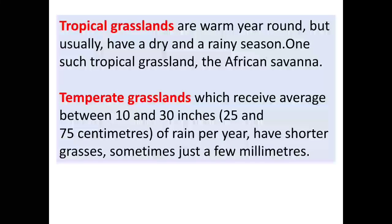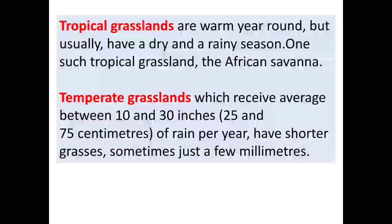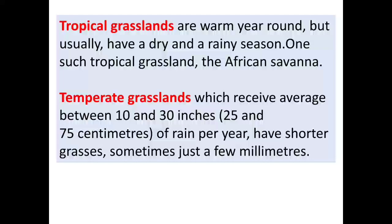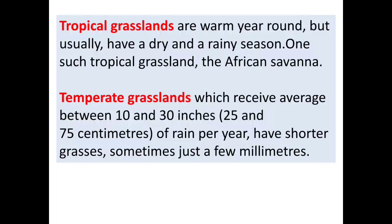Tropical grasslands are warm year round, but they usually have a dry and a rainy season. You have to be careful about Africa's savanna grasslands — it is a tropical grassland in Africa.